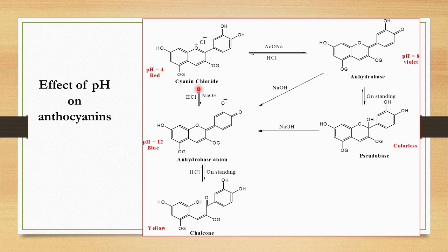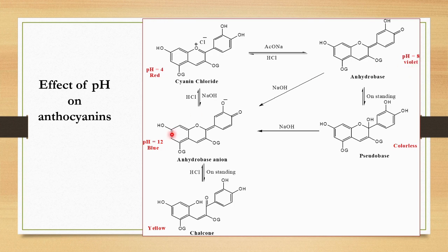If we add base to cyanidine chloride or to the anhydrobase, we get the anhydrobase anion. The only difference here is that one is the anion and the other is the enol compound — this is actually the enolate, and this is the enol. You can see the color here is violet and the other is blue. After some time on standing, this anhydrobase anion converts into the chalcone, which is yellow in color.